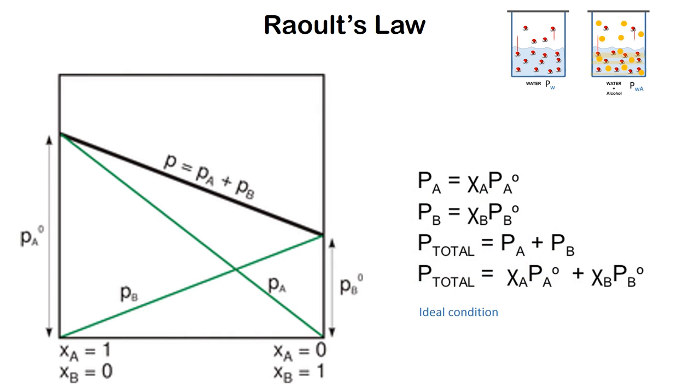And this is what Raoult's law states. If PA is the partial pressure created by A, which is alcohol in our case, and PB is the partial pressure created by B, which is water in our case, the total vapor pressure over the solution is the sum of the partial pressure created by A and the partial pressure created by B.